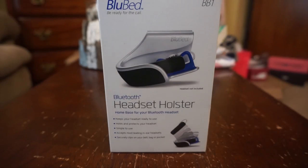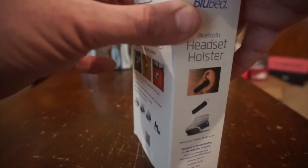You can't find it, you end up missing the call. What the BluBed is meant to do is create a permanent nesting location for your Bluetooth headset that you can clip onto your belt loop, belt, purse, bag—wherever—so that you always know where your Bluetooth headset is and you can easily access it.